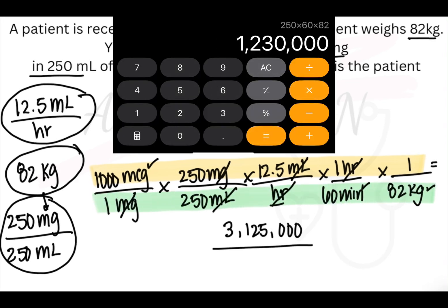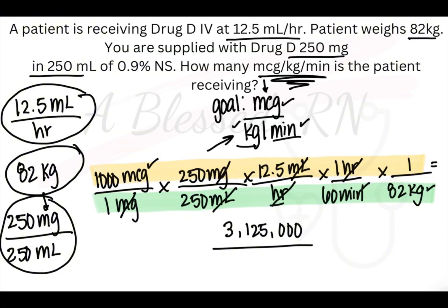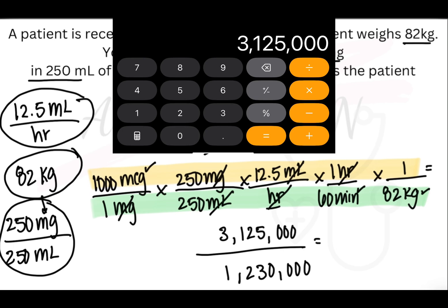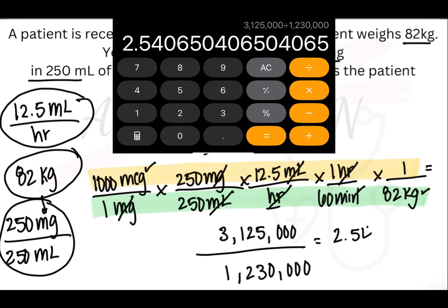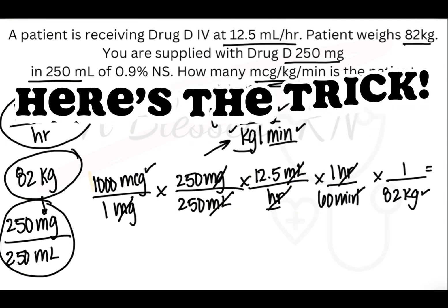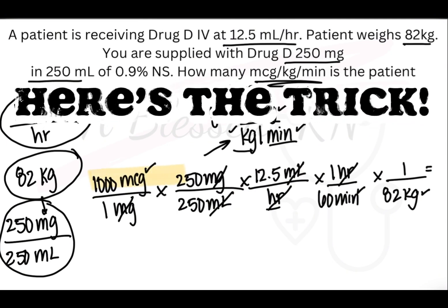250 times 60 times 82. I don't include the ones because they don't make a difference. We get that long number again, 1,230,000. Making sure I include all of the zeros. Now I divide the top by the bottom to get the answer. You see how you have to make sure that you put all the zeros into place. The more steps you take, the more mistakes you make. So here's the trick.